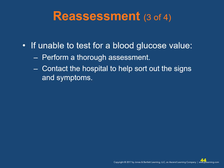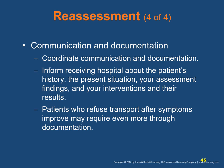Determining blood glucose level can be difficult when signs and symptoms are confusing and you have no way to test for a blood glucose value. In these situations, perform a thorough assessment and contact the hospital for help. Coordinate communication and documentation: inform the receiving hospital about the patient's history, the present situation, your assessment findings, and interventions with results. Patients who refuse transport because symptoms improved after oral glucose may require especially thorough documentation.